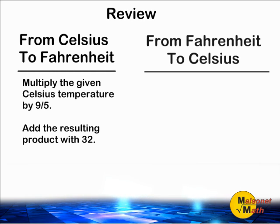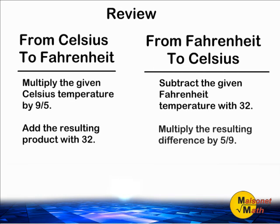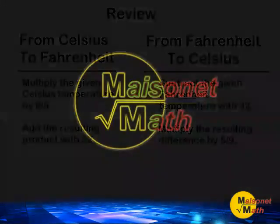And when converting from Fahrenheit to degrees Celsius, remember to start by subtracting the temperature given in Fahrenheit with 32. And then take the resulting difference and multiply that by 5/9.